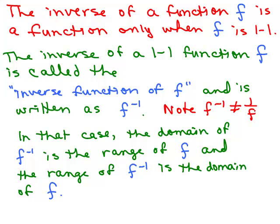If f were a variable like x or n, representing just a variable, then f⁻¹ would mean 1 over f. But in this case we are talking about functions. If we have an inverse function of f, the domain of f inverse is the range of f, and the range of f inverse is the domain of f — they simply switch the domain and range because you're switching all the x and y values.